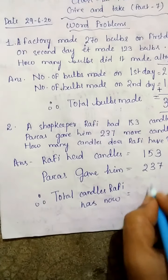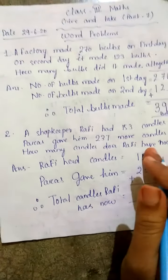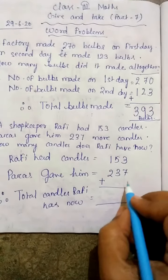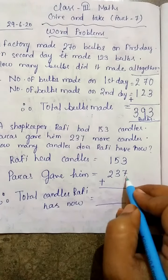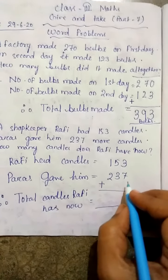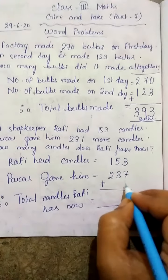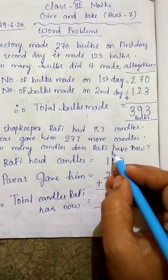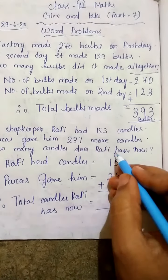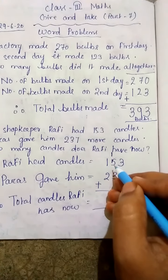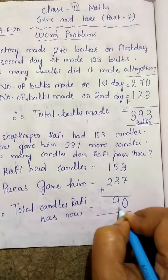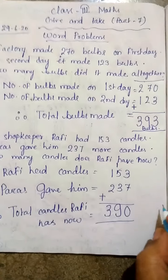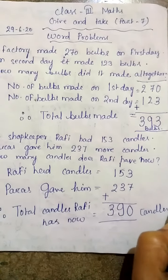Rafi has now is equal to — 153 candles Rafi के पास पहले से थे, 237 candles अभी Paras ने दिए। देखो, 3 plus 7 is equal to 10 — 10 means we have to carry 1 here and put 0 here. 1 plus 5 plus 3 is equal to 9. 1 plus 2 is equal to 3. तो Rafi के पास अभी 390 candles हो गए हैं।